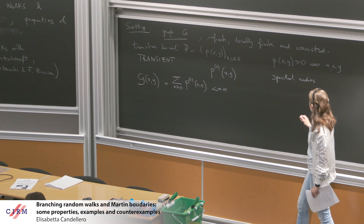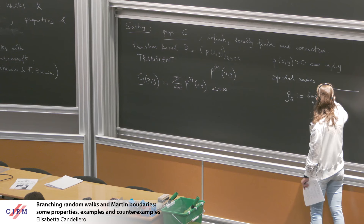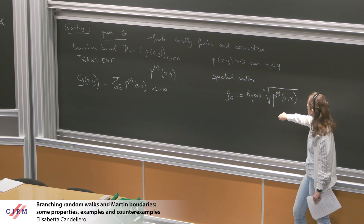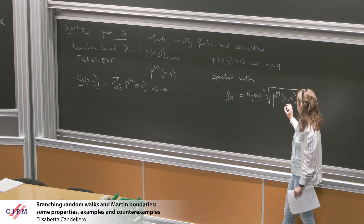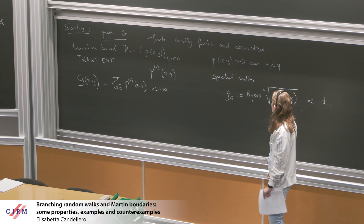Let me define another quantity that will be very important later: the spectral radius of the random walk, which I denote by ρ(G). It is defined as the lim sup over n of the nth root of P^n(x,x). By our assumptions, this value does not depend on x. I will make an assumption that I will need later on, which is that ρ(G) must be strictly smaller than one.